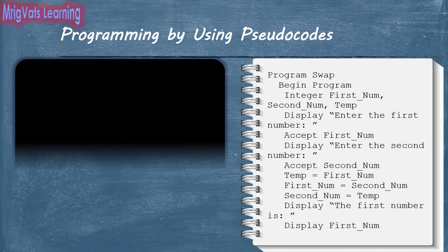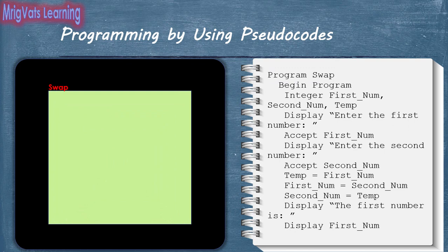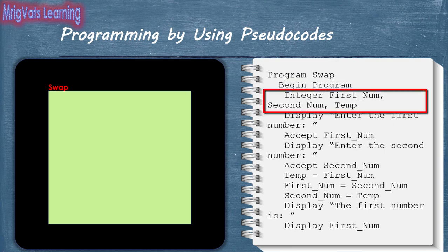Now let us summon our virtual memory board and evaluate the program with a dry run. As soon as you run the swap program, the computer reserves a memory block for the program, which is enclosed between the Begin Program and End Program statements. With the integer statement, the program declares and creates three variables — firstnum, secondnum, and temp — of integer type at random locations within the memory block. These chunks of memory are referred to with their respective names.